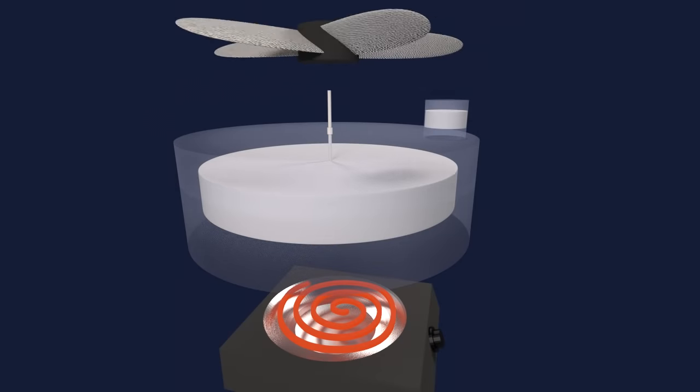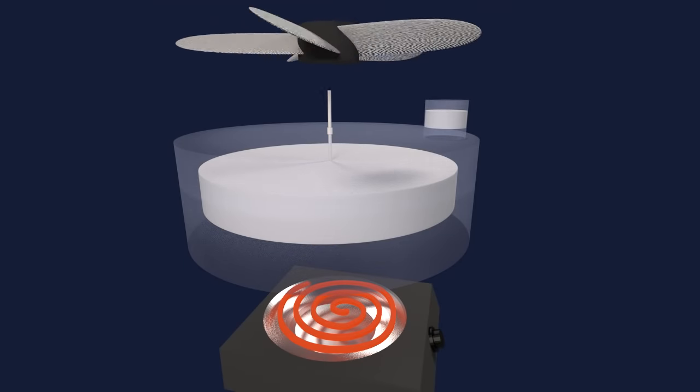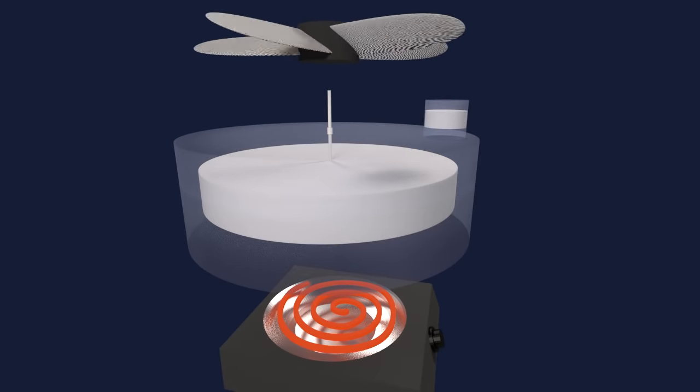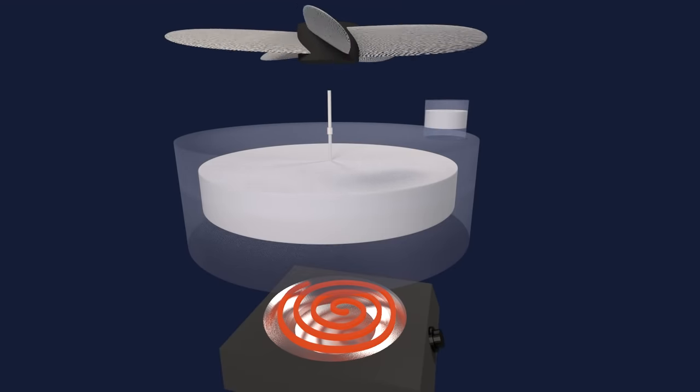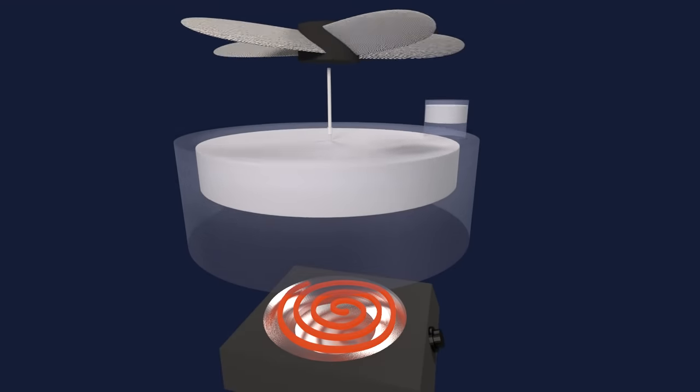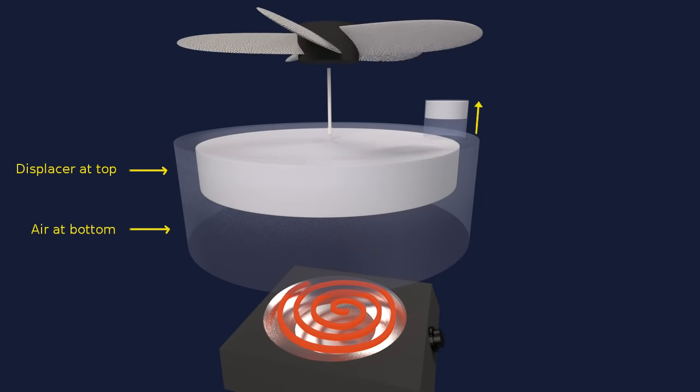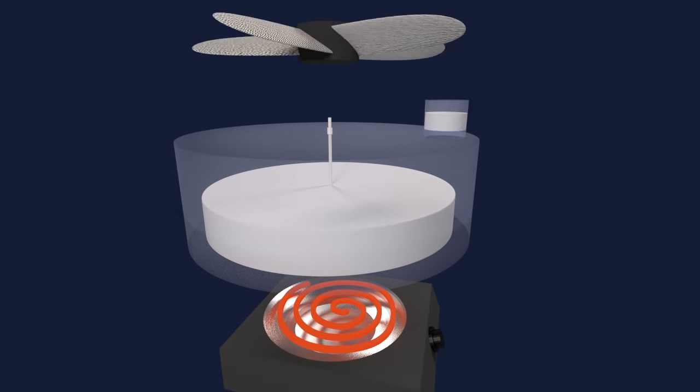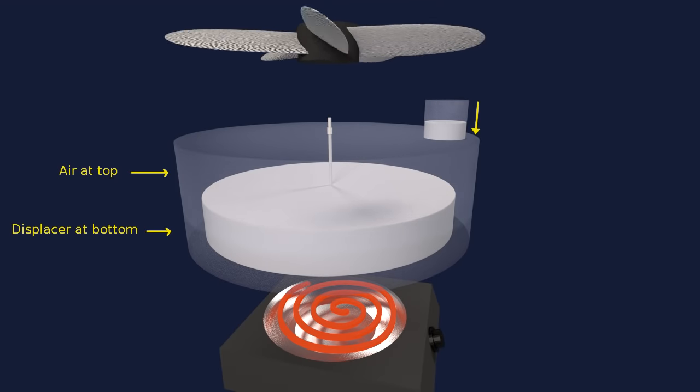Now if we heat one end of the cylinder and cool the other end, we can use the displacer to quickly heat or cool the air inside and move the piston up or down. With the displacer at the top, the air moves to the bottom and heats up. With the displacer at the bottom, the air moves to the top and cools down.